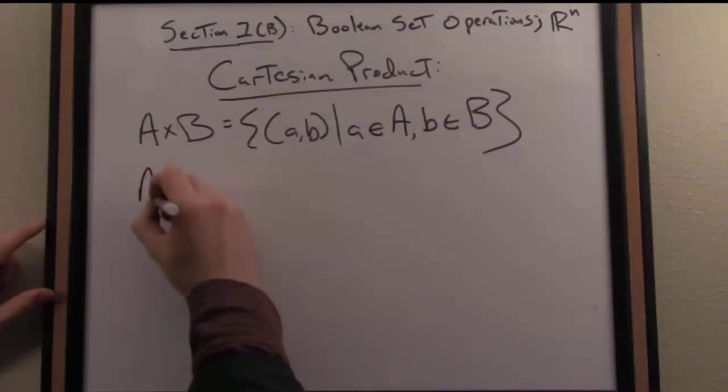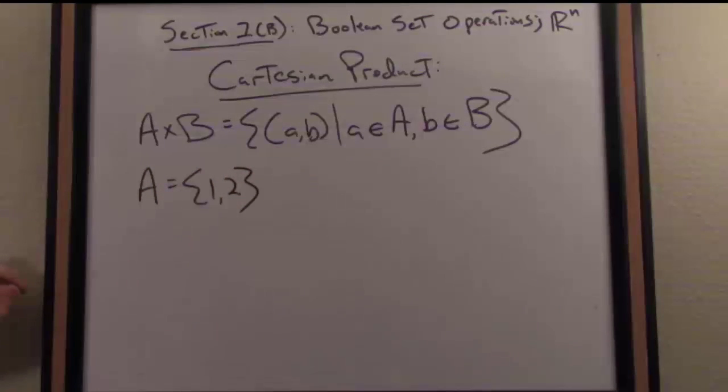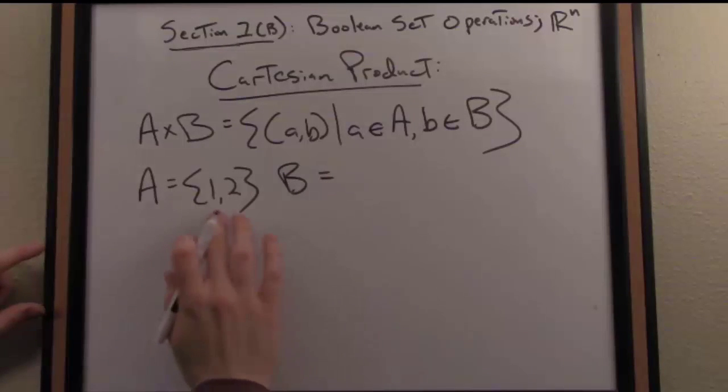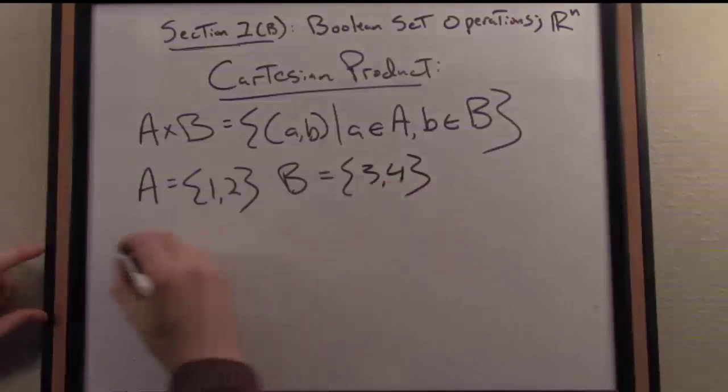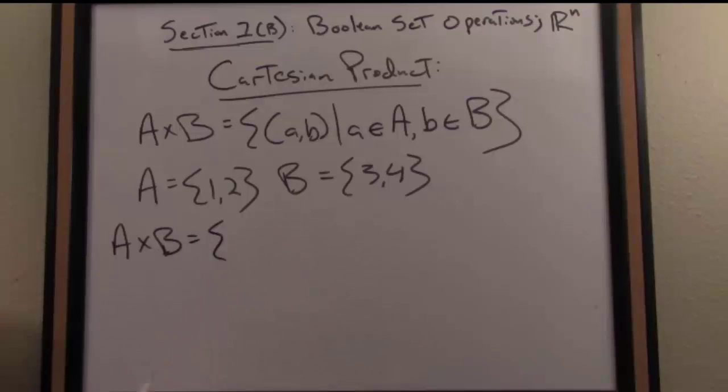So let's say the set A is consisting of the elements one, two, and B consists of the elements three, four. So then what would the Cartesian product of A and B be?